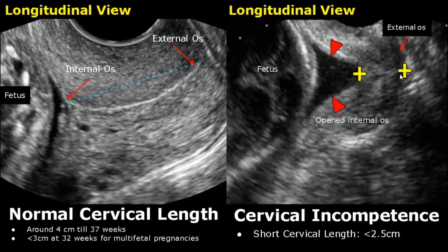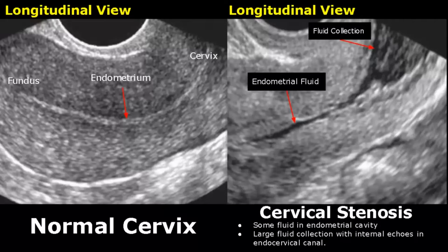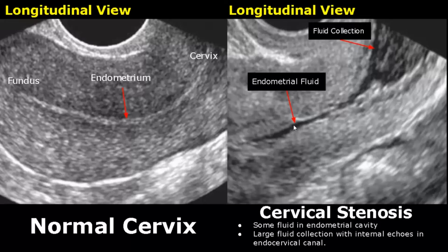Visually, we can see that the cervix here is much shorter than in the normal image, with the fetal head visible. Cervical stenosis is the abnormal narrowing of the cervix — it is difficult to diagnose on ultrasound, but we may see endometrial fluid and a large fluid collection with internal echoes in the endocervical canal.